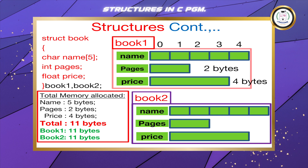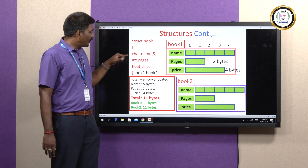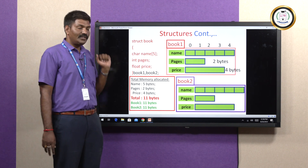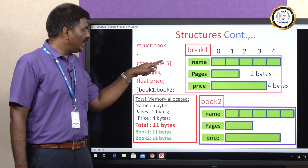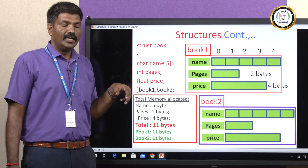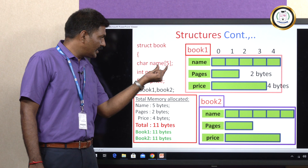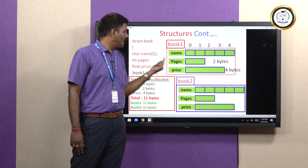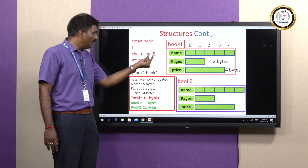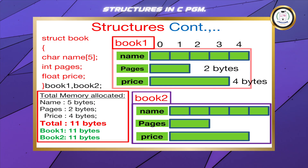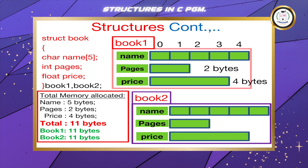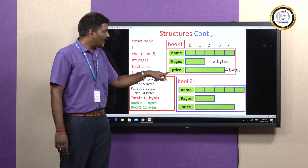You can see the memory representation for this particular structure. I took another example — structure book — with members: name, page number, and price. According to the structure definition, you can store n number of values under different data types. Character name[5] — though in the previous slide I used size 20, here I use size 5 for the diagram representation. Name takes 5 locations (one byte each for char), page number takes 2 bytes, and price takes 4 bytes.